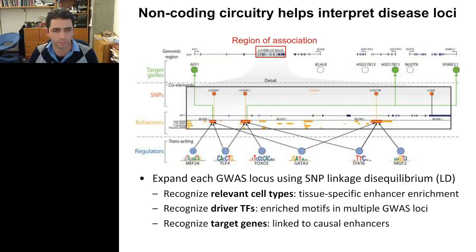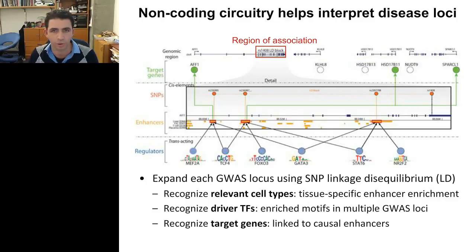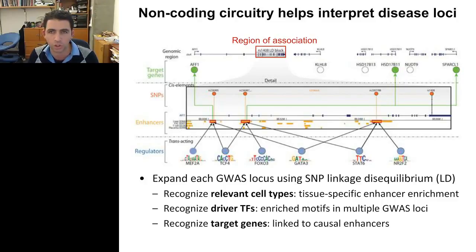This results in a systematic map that allows us to go into any region of association and map all genetic elements — individual single nucleotide polymorphisms — the enhancers in which they fall, the cell types in which those enhancers are active, the genes each enhancer likely controls, and the regulators that control each element. We can go from an unannotated non-coding region containing no protein alterations to a complex circuit that tells us the likely target genes, driver SNPs, altered enhancers, active cell types, and upstream regulators.